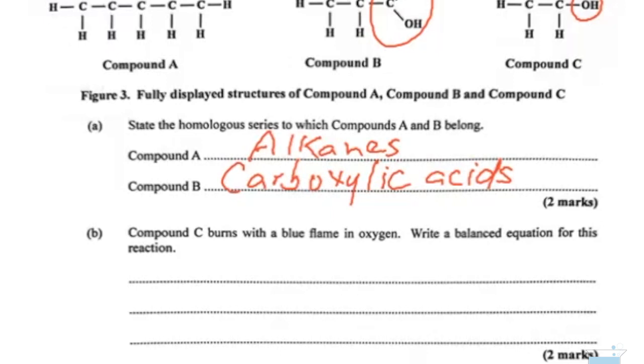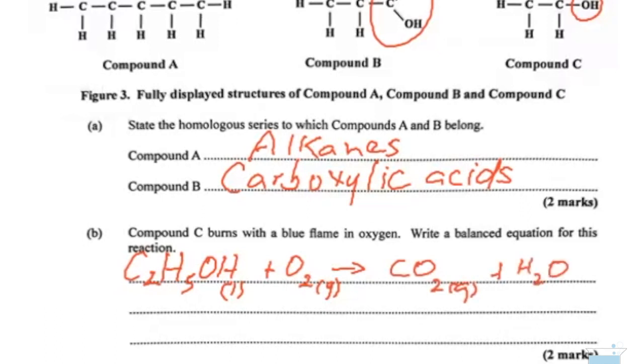They're saying compound C burns with a blue flame in oxygen. That's ethanol, and they want us to write a balanced equation for this reaction. So ethanol here, C2H5OH, that's a liquid that burns in oxygen. Whenever we write oxygen as an element, we write it as O2. This will give us carbon dioxide and water, water here in the form of a vapor.